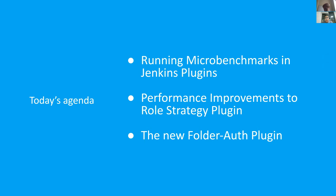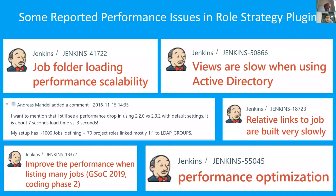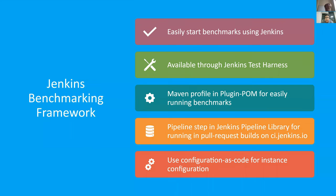Then we'll talk about the performance improvements to the Role Strategy plugin, and finally discuss the new Folder Authorization plugin. There were a lot of reported performance issues in the Role Strategy plugin, so this is where the project starts from. In the first phase, we created a benchmarking framework for Jenkins which enables users and plugin developers to run JMH benchmarks.